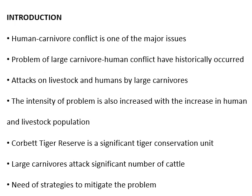As interference of humans in wildlife areas increases, so does the intensity of the problem. Corbett Tiger Reserve is a significant tiger conservation unit under Project Tiger — the government of India's scheme — playing a very important role in tiger conservation. Large carnivores like tigers and leopards attack significant numbers of cattle belonging to local communities, creating antipathy among locals and negative attitudes toward conservation. Until local communities support conservation efforts, we cannot conserve wild animals, so there is an utmost need for strategies to mitigate the problem.